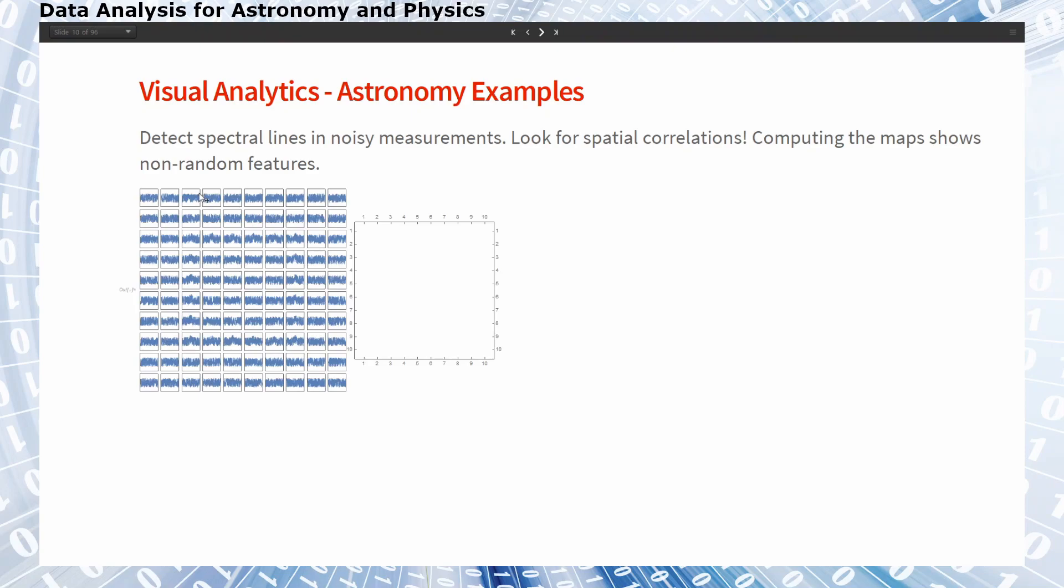If we integrate every single spectrum we have the advantage that much of the noise cancels out and the signal is left. And if we plot then this array of integrated spectra as a map and color coded it looks like this.